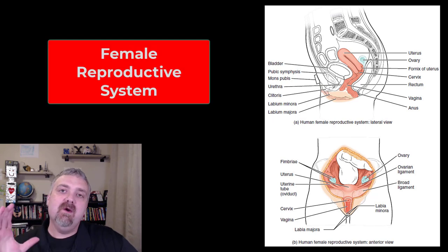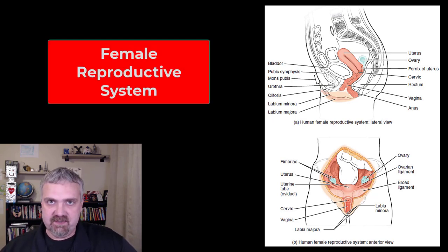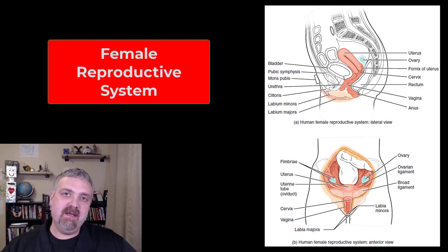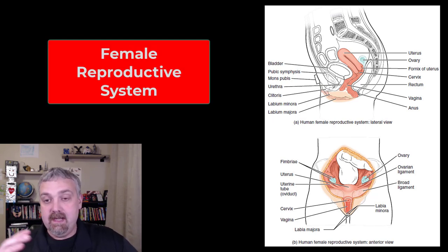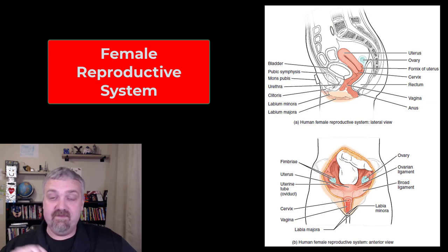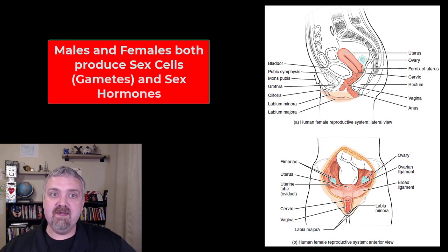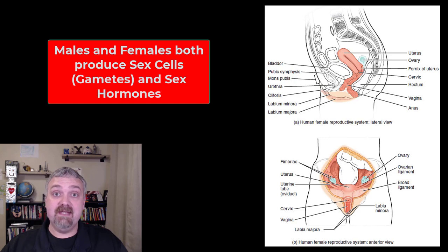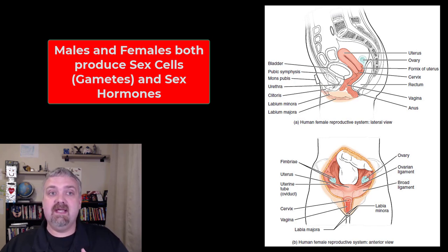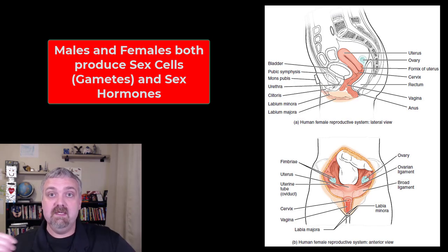Hey everybody, Dr. O here. Welcome to the female reproductive system. We just got done covering the male system. Both the male and female systems are primarily designed to produce gametes — our sex cells — and reproductive hormones.